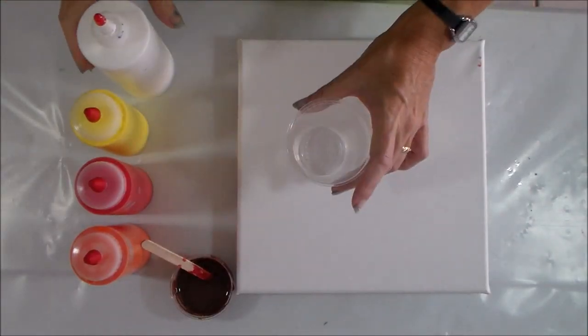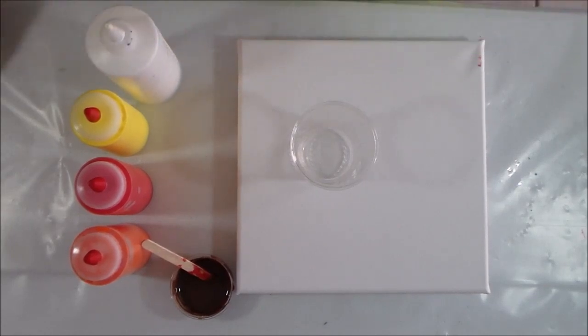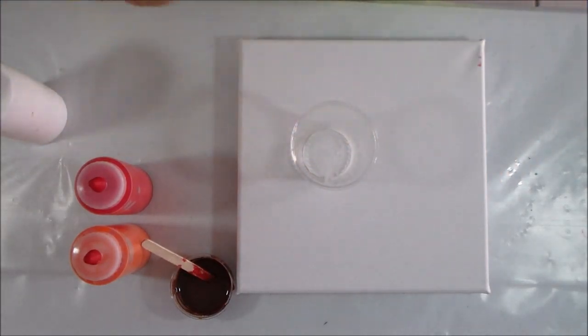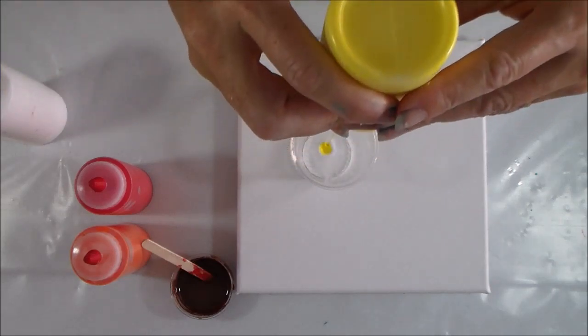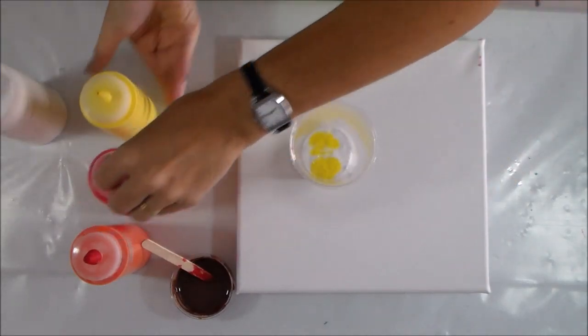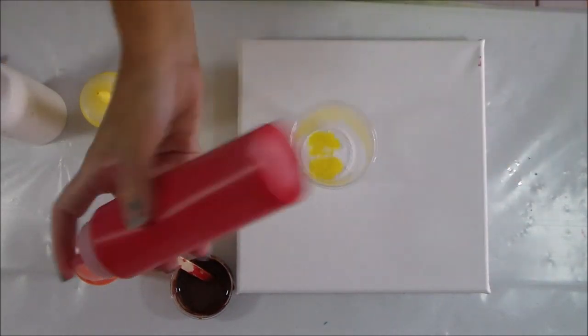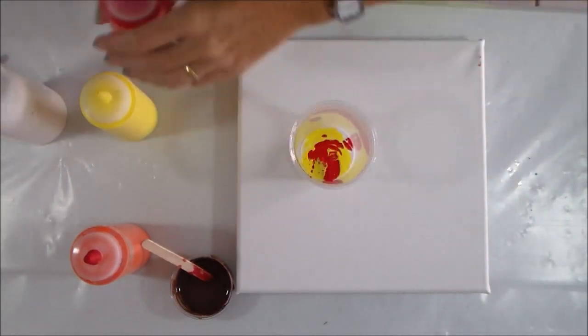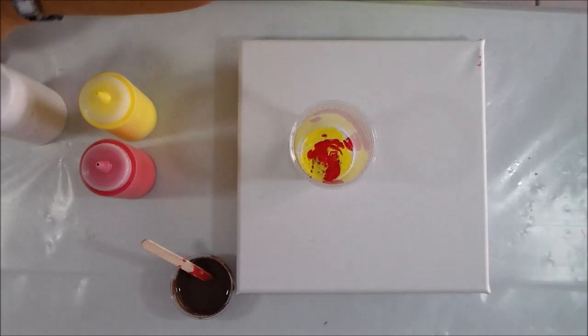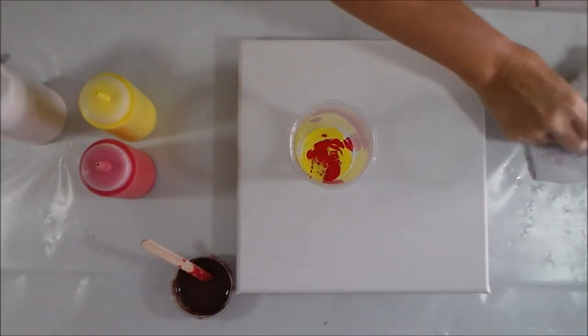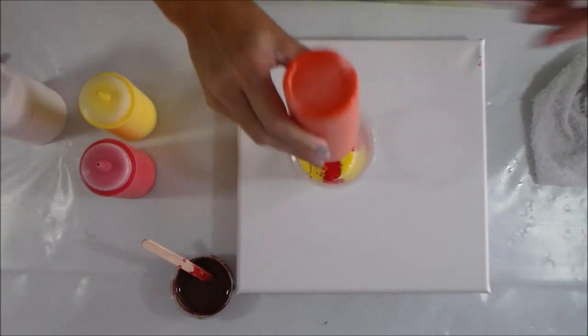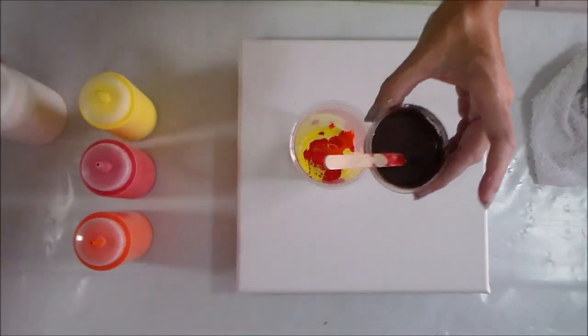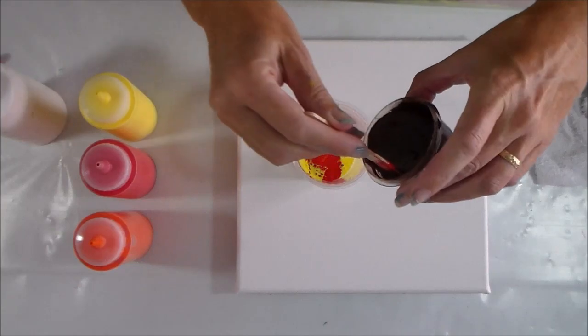I thought I would do a flip cup today because those always seem to be my favorites. Starting with my base of white, then this crazy bright lemon yellow, my warm red, and my orange. This orange always seems to take over in the paintings, so I'm expecting I'll mostly get an orange painting, but we'll see. And the burnt umber.